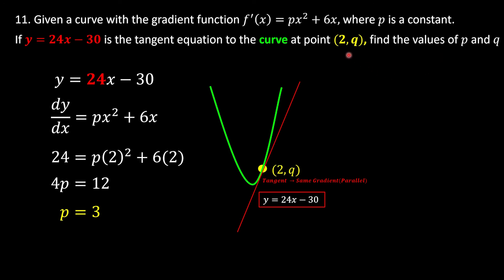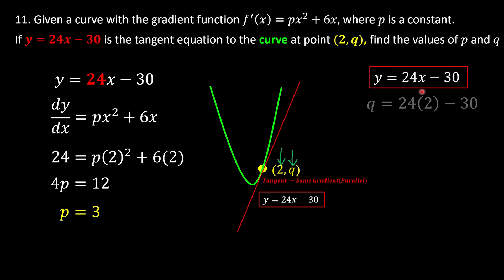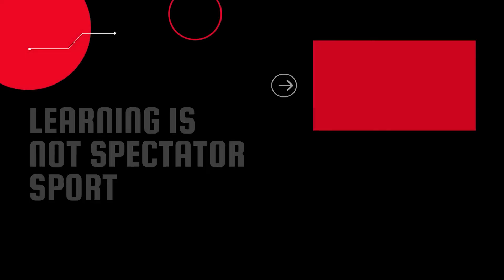Now we find q. Since we know the x-coordinate is 2, we substitute x = 2 into the equation of the tangent line y = 24x - 30. Solving gives q = 18. We are done with this question.